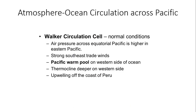Speaking of the circulation where the ocean and atmosphere come together across the Pacific Ocean — this cannot be overstated enough. We have many teleconnections in the Pacific Ocean that have a significant bearing on the weather downstream from the westerlies, generally towards the United States. These include the El Niño Southern Oscillation, the Madden-Julian Oscillation, the Pacific Decadal Oscillation (PDO), and the Walker Circulation Cell.